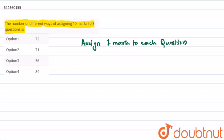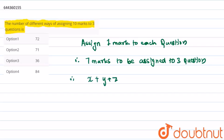Therefore we have been left with seven marks to be assigned to three questions. Therefore the sum of the marks assigned to each question, that would be x plus y plus z, should be equal to seven marks. Therefore number of ways...